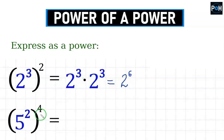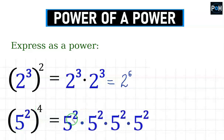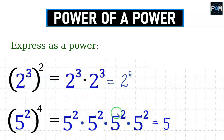In the second example, it will be similar. We also have a power: 5 squared, and we need to raise that to the fourth power. This means what's in the brackets I now have to write 4 times and multiply. So this breakdown looks like this — we have written 4 times this power of 5 squared. Our result is 5 to the power of 2 plus 2 plus 2 plus 2, which gives us 8. So the result is 5 to the 8th power.